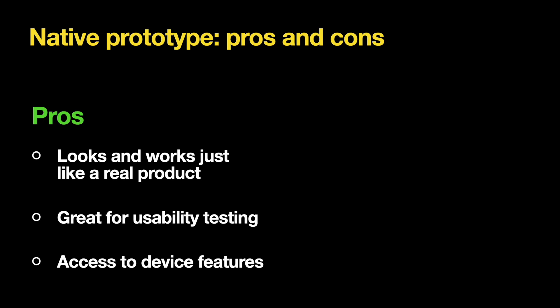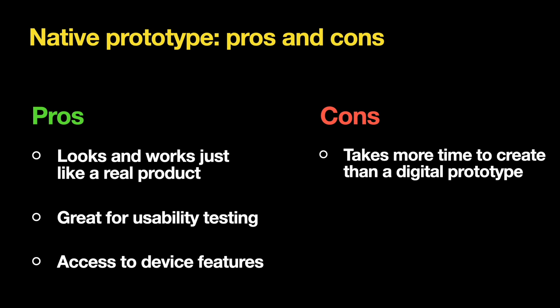Native prototyping also allows you to utilize all the features a device has — for example, if you prototype a mobile app, you get access to features such as the accelerometer or gyroscope. However, this type of prototype has its downsides: native prototypes take more time to create than digital prototypes and require strong technical proficiency, meaning you need to know programming languages to build one.